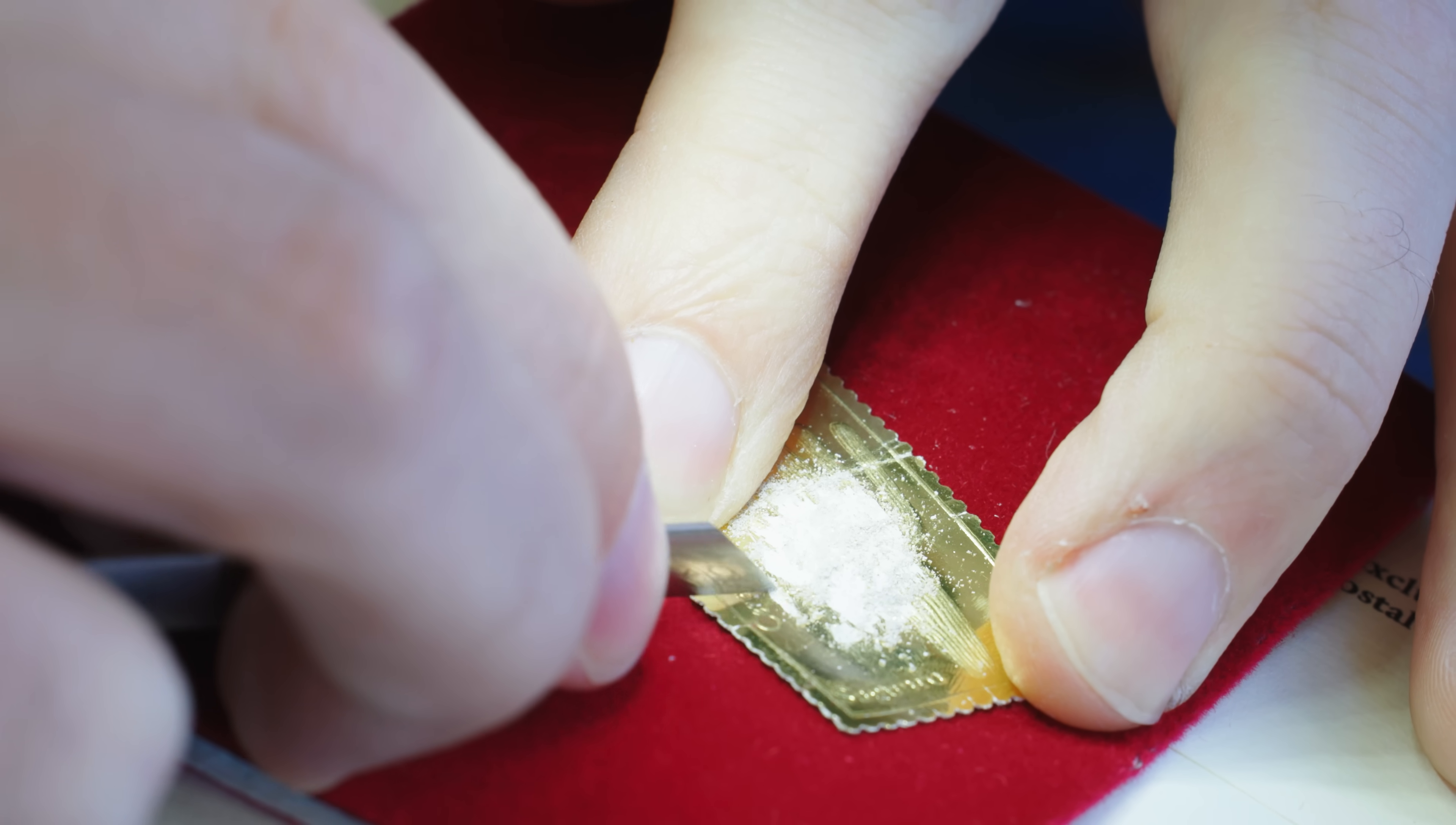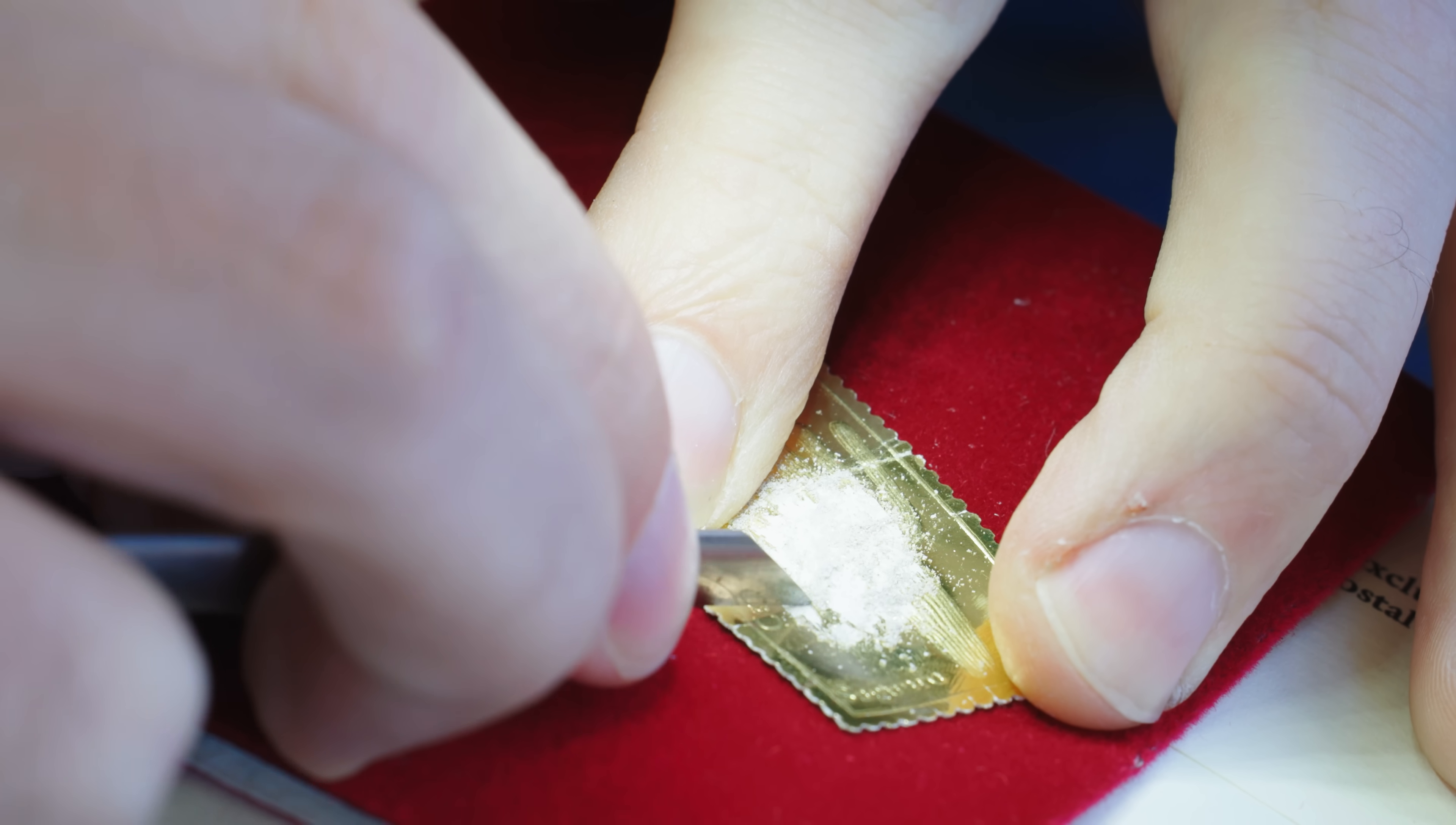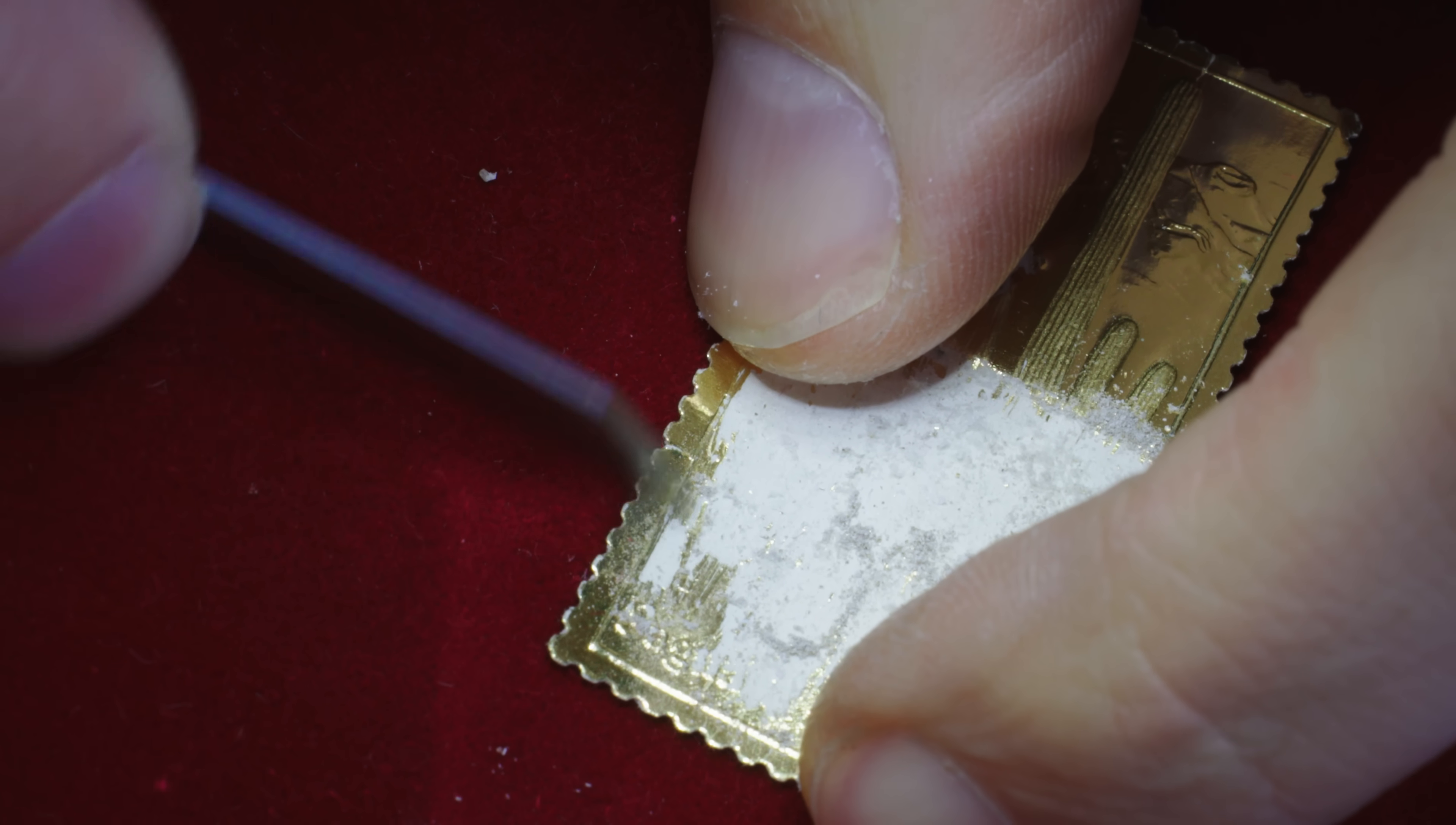So the first thing I was thinking is that there's a lot of paper on these gold stamps. So because of that, I don't want to necessarily just burn down the stamps directly. I want to see if I can remove the gold by itself while maybe getting rid of as much paper as I can. And the best way I could think to do that was simply by scraping the gold off.